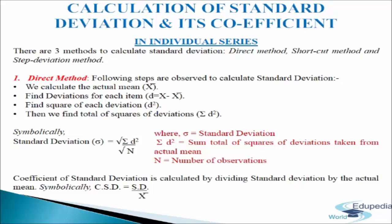The coefficient of standard deviation is computed by dividing the standard deviation by the actual mean. Symbolically, CSD = SD / mean, where SD is standard deviation. These are the formulas under the direct method.